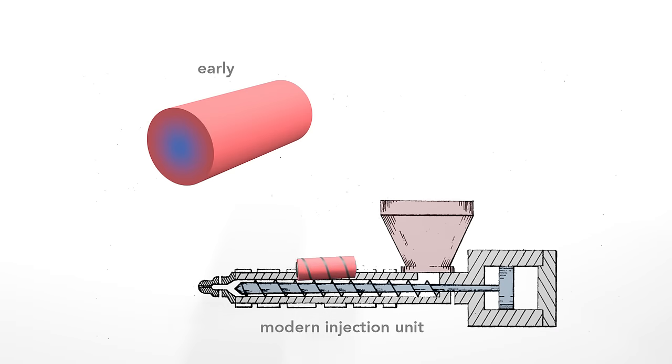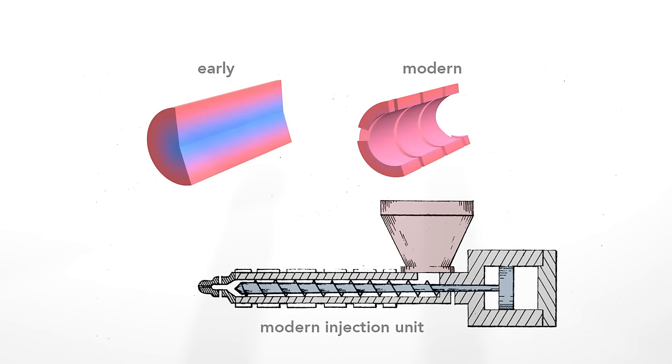First, in modern units, the plastic fills only the space around the shaft of the screw. This eliminates the cooler central region, leaving a thinner, evenly heated layer of plastic.